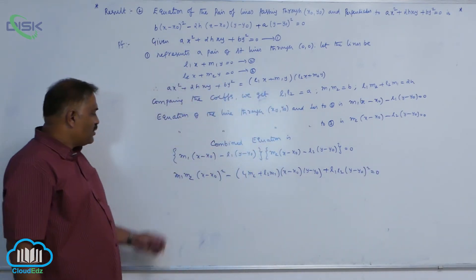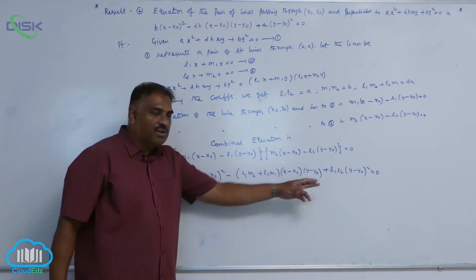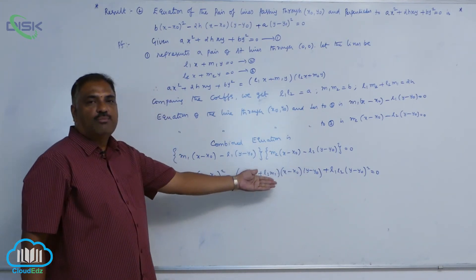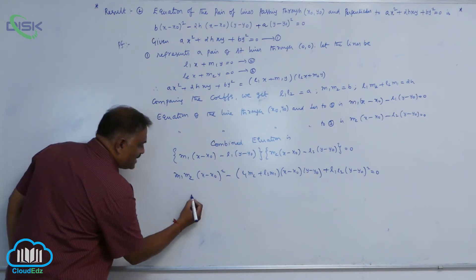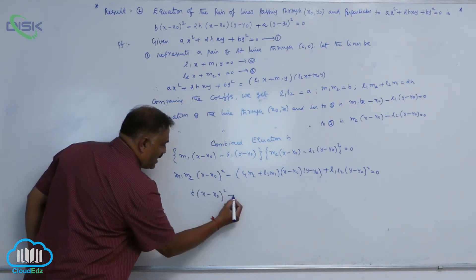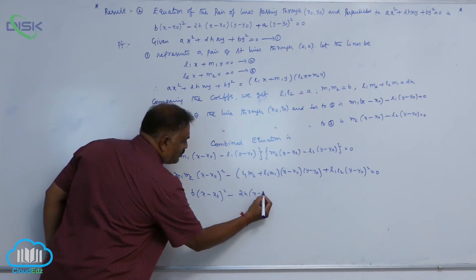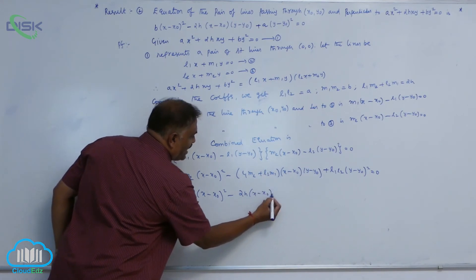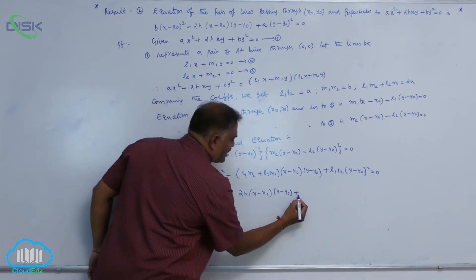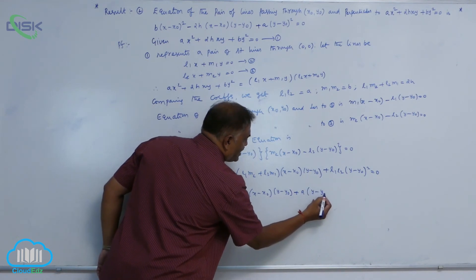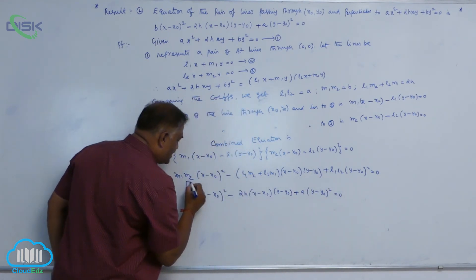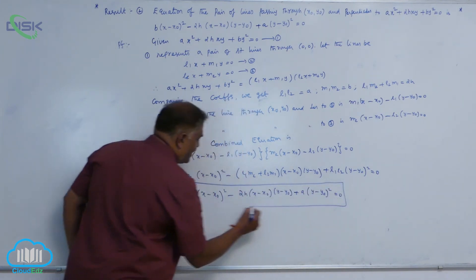Using the known values of l₁l₂, m₁m₂, and l₁m₂ + l₂m₁ obtained by comparing coefficients, this becomes b(x - x₀)² - 2h(x - x₀)(y - y₀) + a(y - y₀)² = 0. This is our required result.